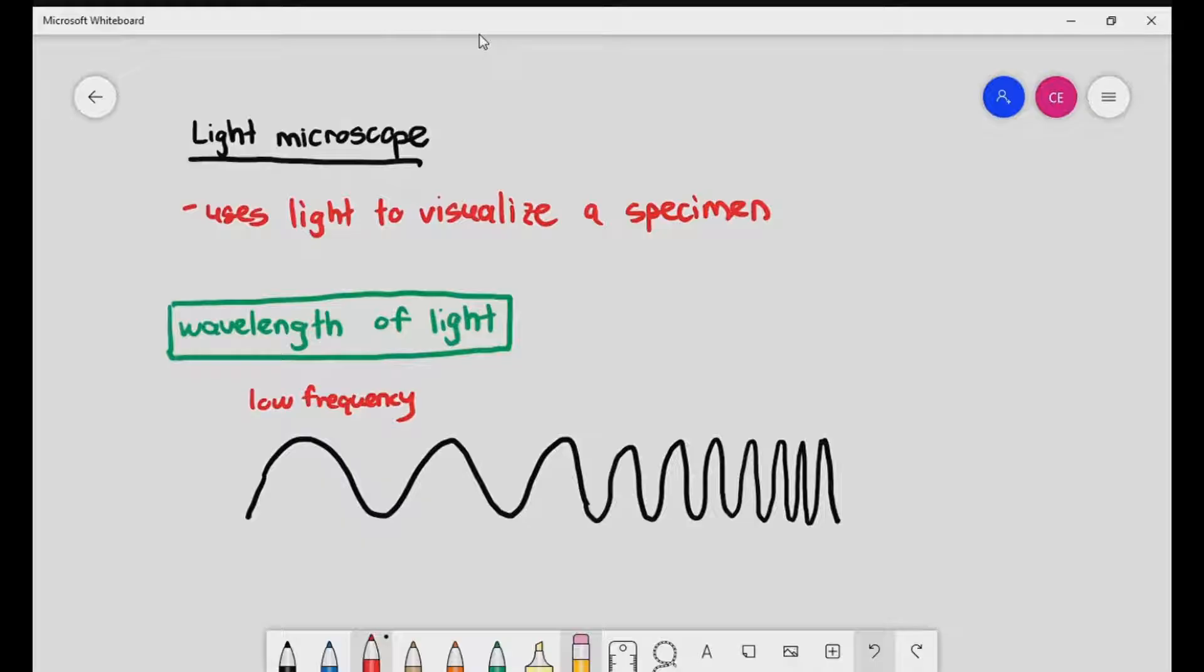Now, high frequency light, that's violet. This is high frequency. It is extremely important to know that red light is considered a low frequency light. Green falls somewhere in the middle. And violet is considered high frequency.